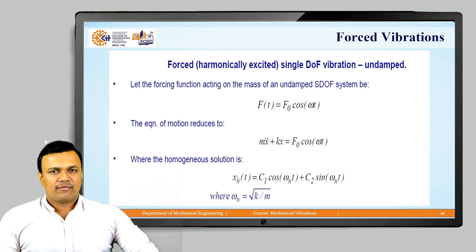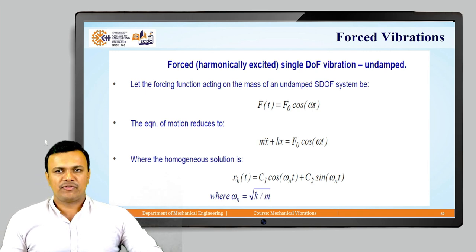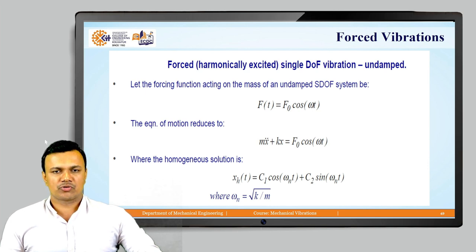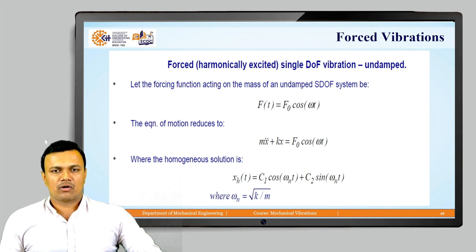Now let us discuss the concept of forced vibrations which are harmonically excited, with a single-degree-of-freedom undamped system. The magnitude of the force is f0 cos(omega-t). Since there is no damping, the damping coefficient c becomes zero, so the equation of motion reduces to mx-double-dot plus kx equals f0 cos(omega-t). The homogeneous solution is xh(t) equal to c1 cos(omega-n-t) plus c2 sin(omega-n-t), where the natural frequency omega-n is the square root of k/m.